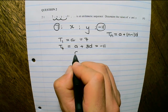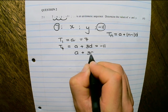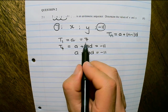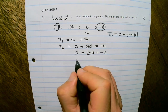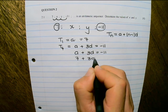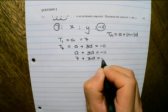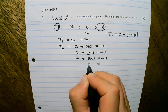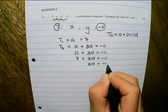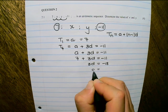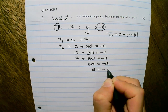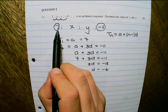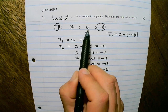So I have a plus 3d equals negative 11. The a value, which is the first term, is 7. So 7 plus 3d equals negative 11. Then 3d equals negative 18, therefore d equals negative 6. That means the difference between terms is negative 6.